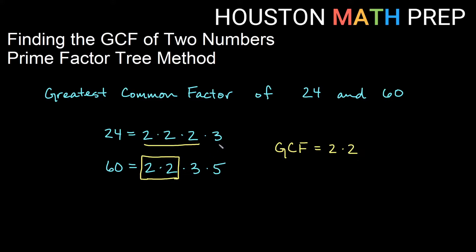Then the next thing I look at: they both have threes, and they both have one copy of three. So they both have at least one copy of three, so I'll go ahead and put a three in there as well. If I look at 60, it has a prime factor of five in its factorization, but there is no factor of five in 24. Since they do not have a five in common, five isn't going into both of them, so I wouldn't write that down. My greatest common factor — the prime factorization of that — is going to be two times two times three, which gives us 12 as the greatest common factor.